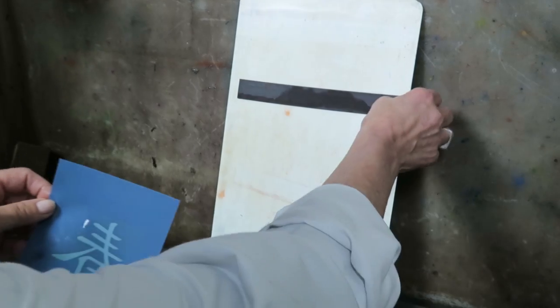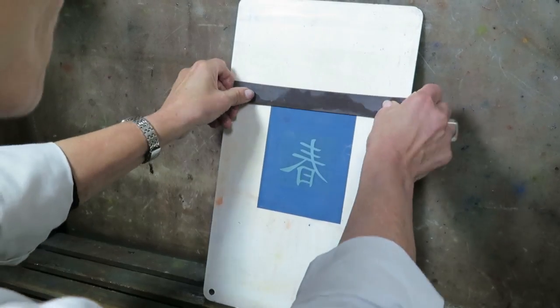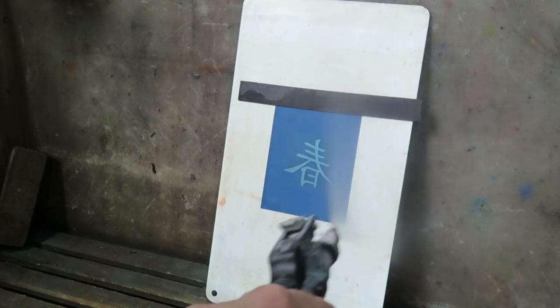Now you can start with the washout process. Clip the screen down with a magnetic strip and then spray the screen with water to wash the emulsion off the image area.